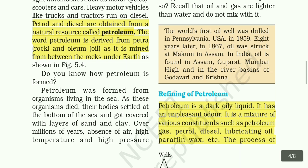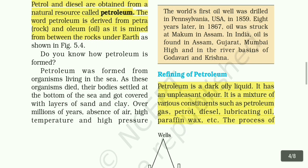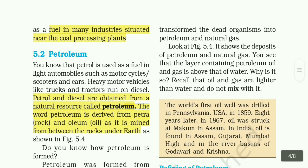Petroleum was formed from organisms living in the sea. As these organisms died, their remains settled at the bottom of the sea and got covered with layers of sand and clay. Over millions of years, absence of air, high temperature, and high pressure transformed the dead organisms into petroleum and natural gas.